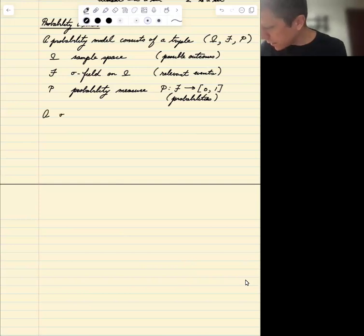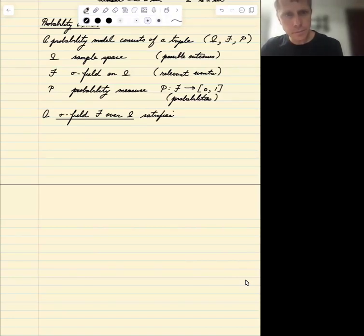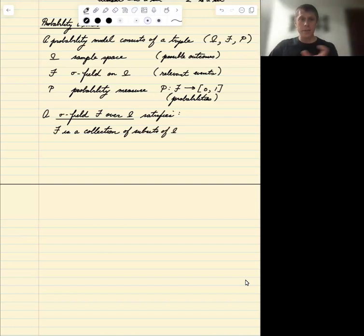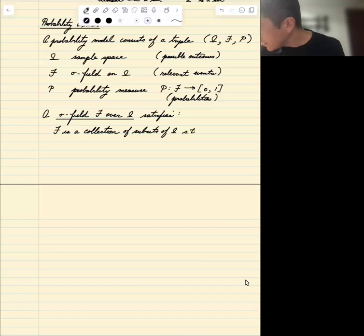The sigma field is the set of relevant events, events of interest. And P is defining the probabilities of those events. So we know what a sample space is, it's a set. Let's define a sigma field. A sigma field F over omega satisfies three axioms. F is a collection of subsets of omega. Remember, collection of subsets of omega, subsets of omega - those are what we call events.